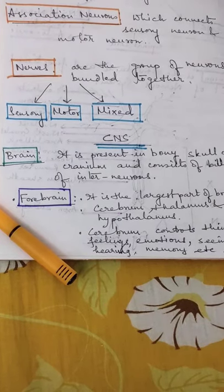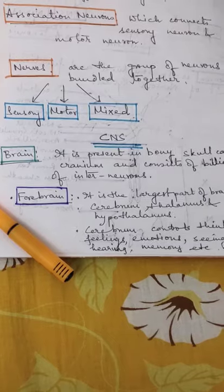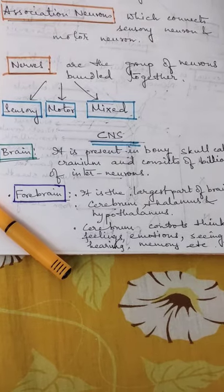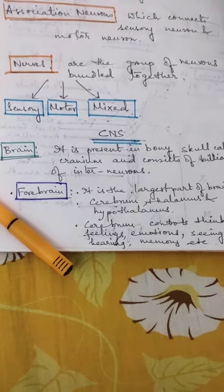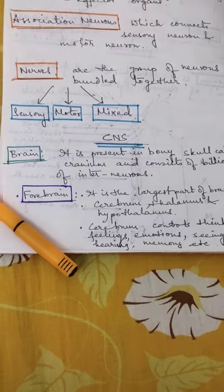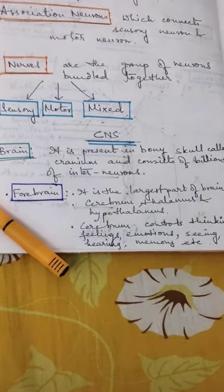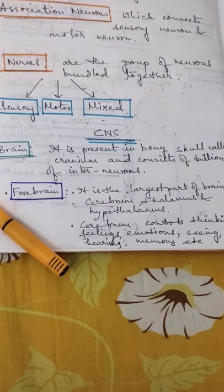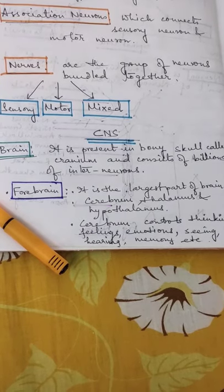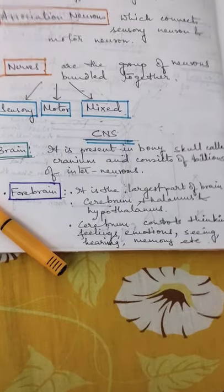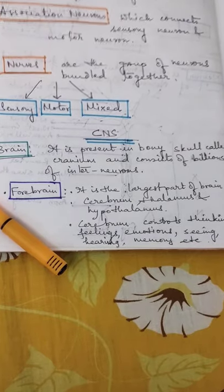Now we will start with the central nervous system. As I said, it consists of two parts: brain and spinal cord. Today we will go through only the brain. It is present in bony skull called cranium, or brain box, and consists of billions of interneurons.